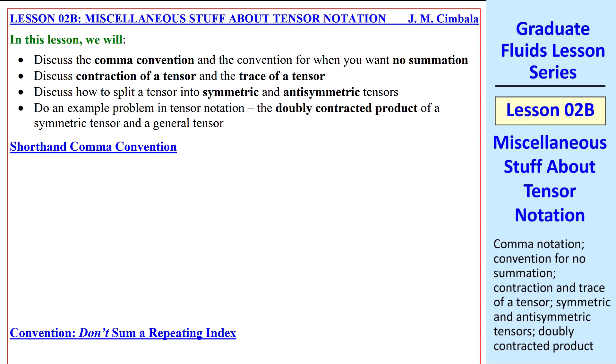First, consider the shorthand comma convention. Tensor notation is already a shorthand convention. del ui del xj is a second-order tensor, for example. We can make it even more shorthand by using the comma convention, ui,j.